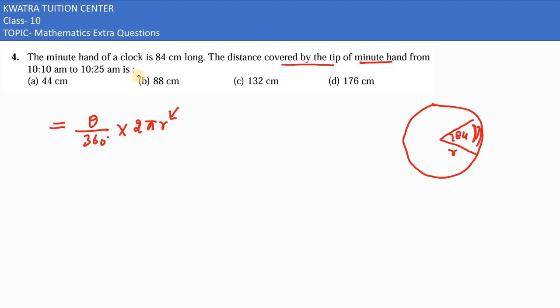And theta kya hoga in this case, you have to find out for 15 minutes because the gap is 15 minutes. Overall angle is 360 degrees, we will divide by that. From 10:10 to 10:25, we have to find it for one minute, how much will it sweep.